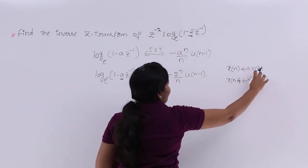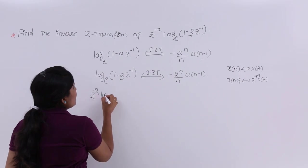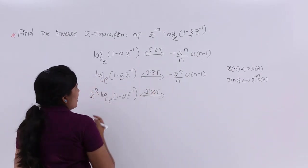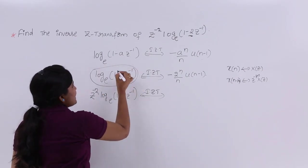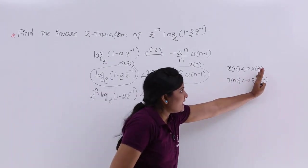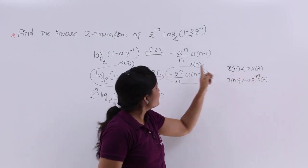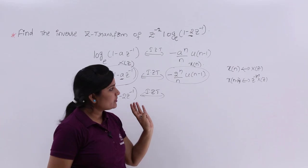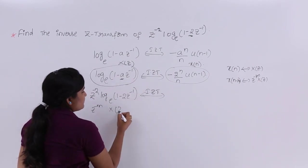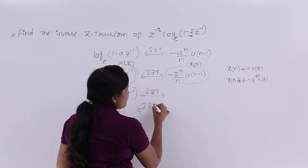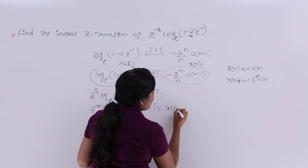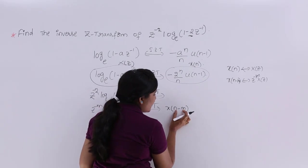They have given Z^(-2) * log_e(1 - 2Z^(-1)), so we need to find its inverse Z-transform. I am considering log_e(1 - 2Z^(-1)) as my X(Z) and its corresponding -(2^n / n) * u(n-1) as my x(n). They are asking for Z^(-M) * X(Z), where Z^(-2) is Z^(-M) and log_e(1 - 2Z^(-1)) is X(Z). The inverse Z-transform of Z^(-M) * X(Z) is x(n-M).